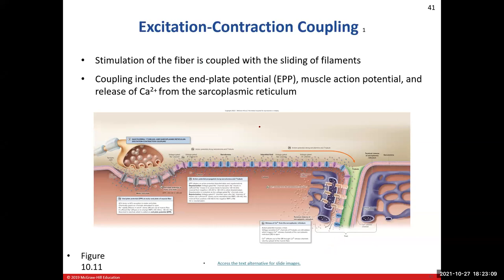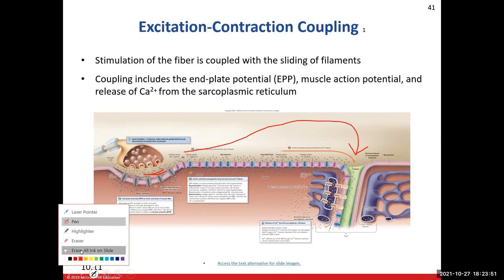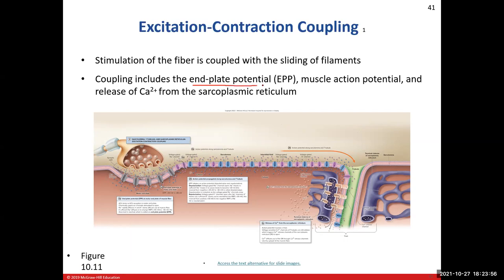The second step to getting a muscle to contract is what we call excitation-contraction coupling. We've got to get a signal from our neuromuscular junction to one of our T-tubules. T-tubules are scattered everywhere. When we eventually create our action potential, it's like throwing a rock into a pond — a big ripple wave going out in all directions. In this step, we're going to see the generation of what we call an EPP, or end plate potential, similar but not the same as a graded potential. Then we'll get a muscle action potential, and our goal is to release calcium from the sarcoplasmic reticulum.